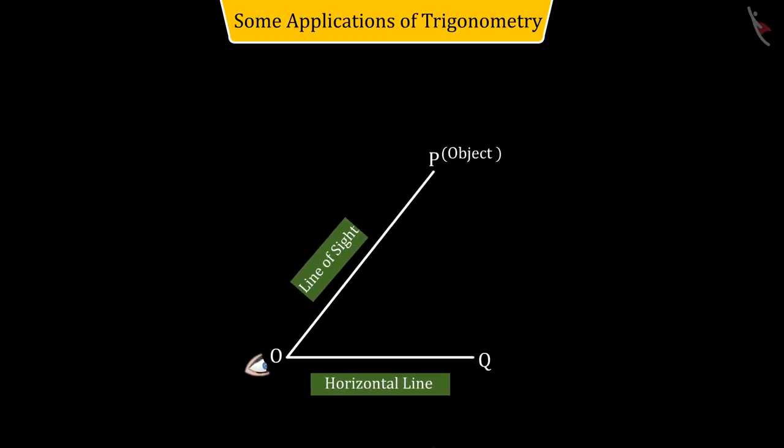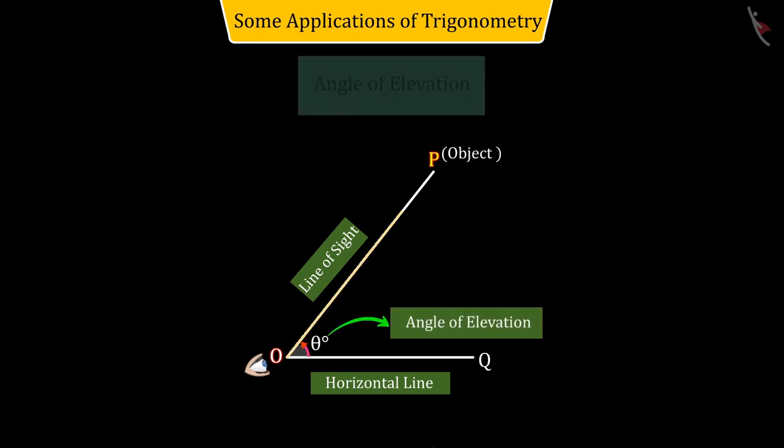If an object P is above the person's eye, i.e. the horizontal line OQ passing through point O, then for the person to see that object, the angle by which he has to raise his vision relative to the horizontal line is called the angle of elevation.